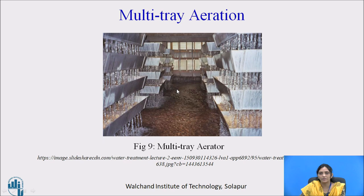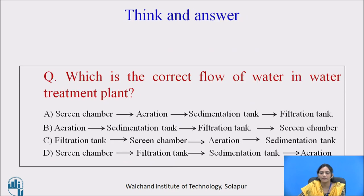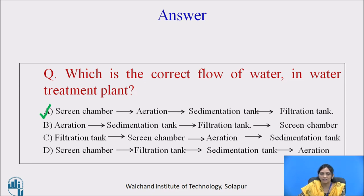There are many types of aeration, but a few have been covered in this session. Now, pause the video and answer the question: which is the correct flow of a water treatment plant? There are four flow chart options — select the correct one. The first option is the correct answer: water enters the screen chamber, then goes for aeration, after aeration it goes to the sedimentation tank, after sedimentation comes filtration, and after filtration we get clear water. This is the correct flow of the water treatment plant.